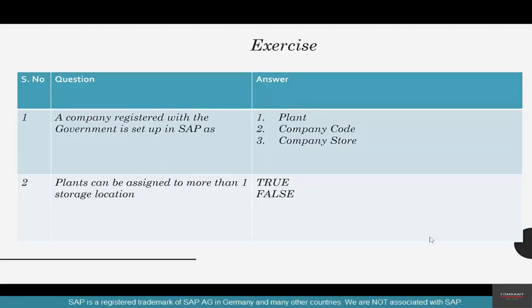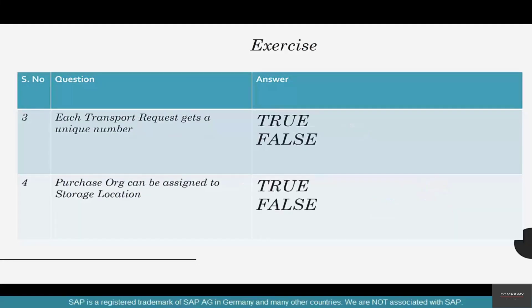Alright, let's solve these questions. A company registered with the government is set up as a company code. Plants can be assigned to more than one storage location — yes. So you have a Chicago plant that can be assigned to more than one storage location: one in Lincoln Park, one in Naperville, and another in Schaumburg. Each transport request gets a unique number — true. As soon as you create your transport request and click new, it will generate a unique number.